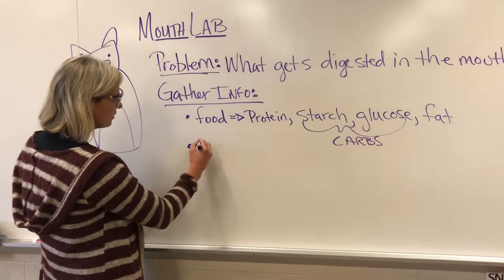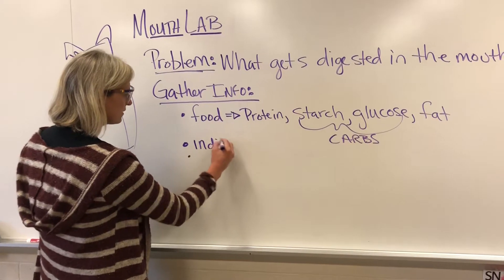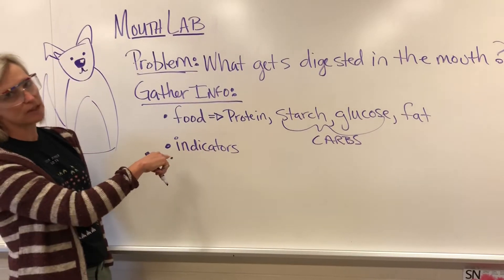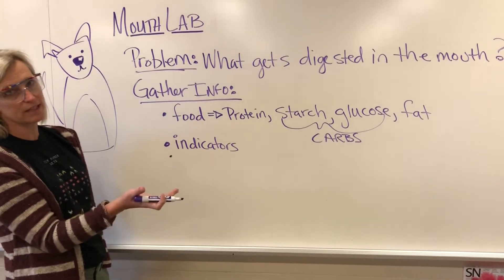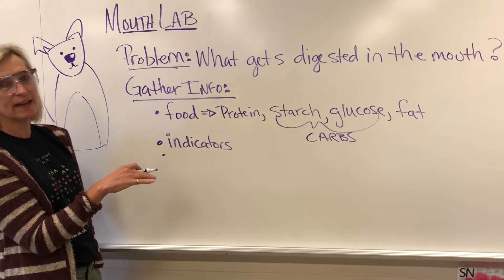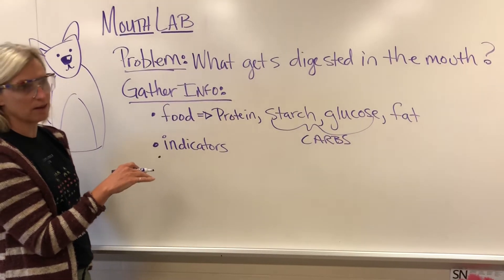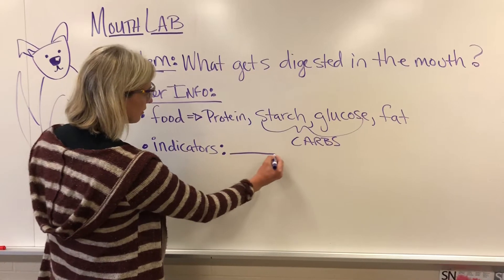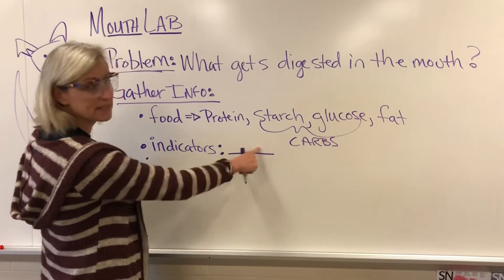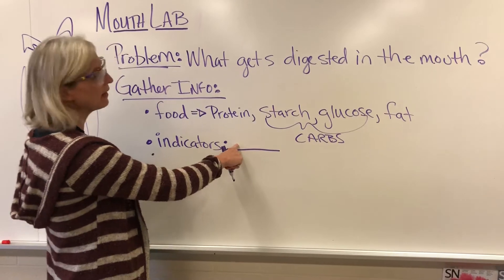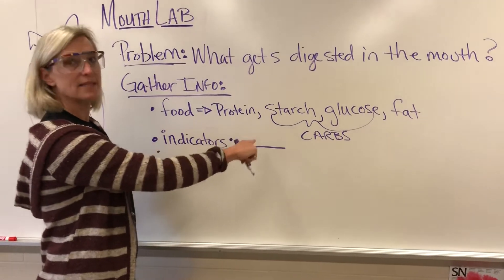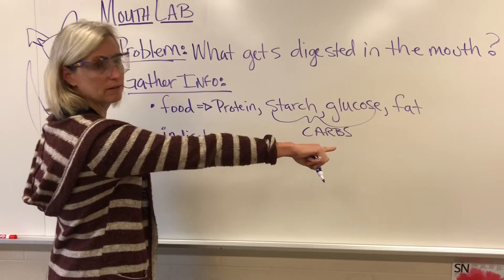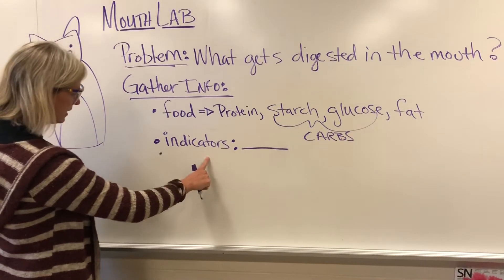We've also learned a little bit about indicators. You can tailor this to your lab: if you're studying starch you care about iodine; if you're studying sugar you care about the sugar indicator. You'll pick one and write what it tests for — for example, iodine tests for starch by changing from yellow to black.